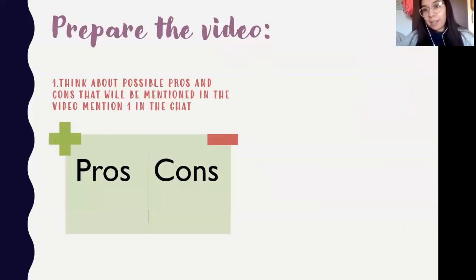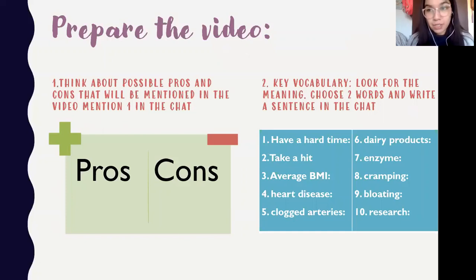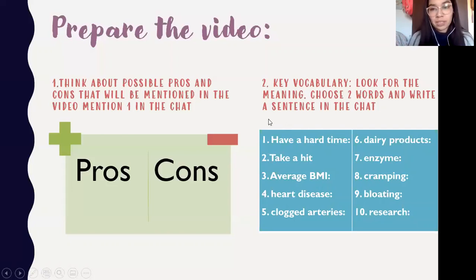If you have any questions, let me know. To prepare for the video, we did item number 2 on vocabulary — we looked up the meaning of those words, made sentences with them, and thought about possible pros and cons that might be mentioned in the video, without watching it — just imagining what could be mentioned. One hint I gave you: 'Average BMI' refers to Body Mass Index — índice de masa corporal — in case you couldn't find it. The rest shouldn't be difficult to look up.